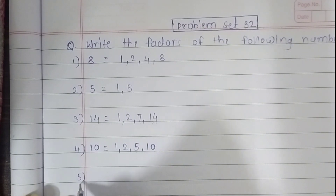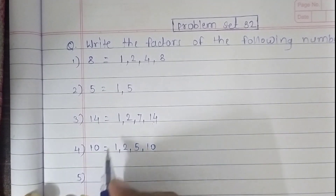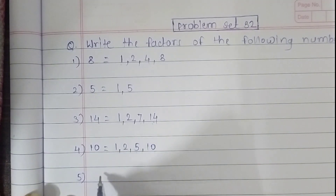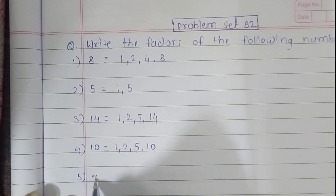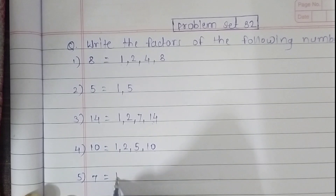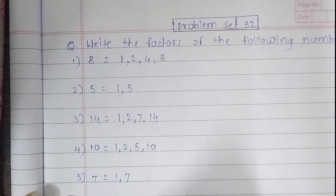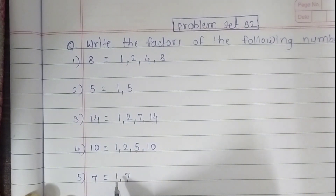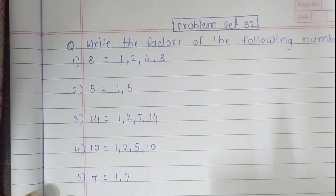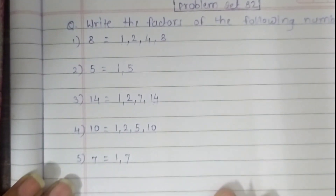The 5th question is 7. The first factor of 7 is 1, and another factor of 7 is 7. It comes in only 2 tables — 1 and 7.